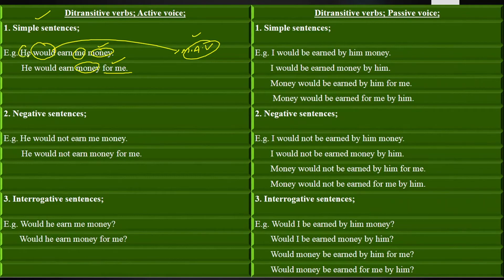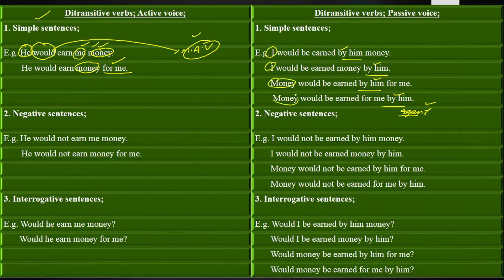When changing to passive voice, you bring the object into the place of subject, and the original subject becomes 'by him,' which is called the agent — it tells us who does the action. When you bring the indirect object 'me' as subject, it becomes 'I,' and 'money' remains as it is.